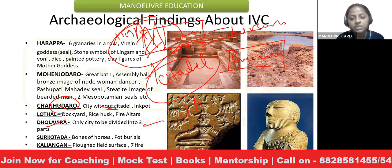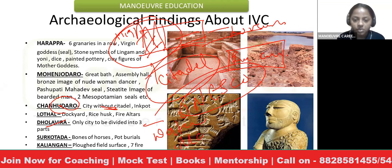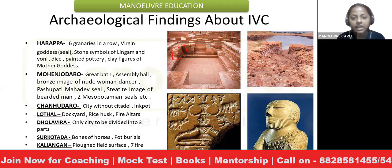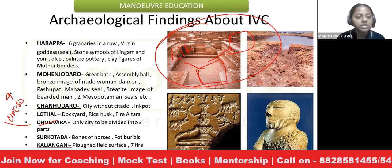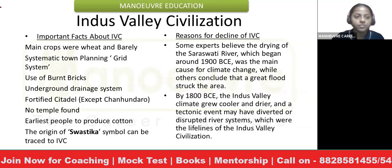Dholavira is a very important site, now declared as a UNESCO World Heritage Site. The greatest feature of Dholavira was its water management system. It was also the only city divided into three parts — a citadel, a low-lying area, and a third distinct part. Because of these unique features, Dholavira is important, and its inclusion makes it the 40th UNESCO World Heritage Site of India.